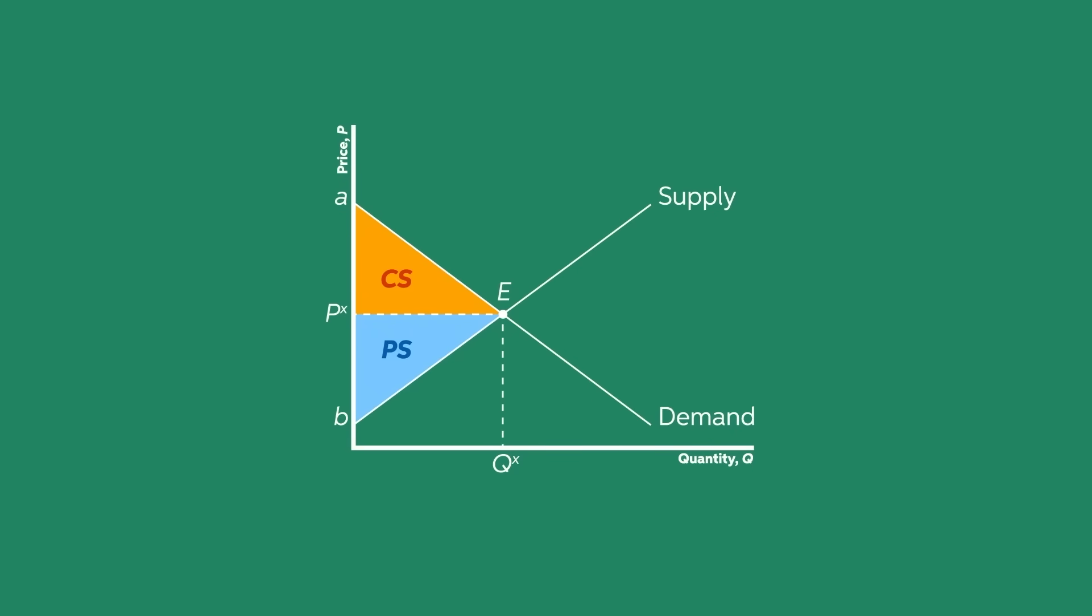In fact, if the quantity exchanged is lower than the quantity equilibrium, say Q prime, then we would miss all the gains from trading the last few units of a product, with a decrease in the social surplus equal to the red shaded area.